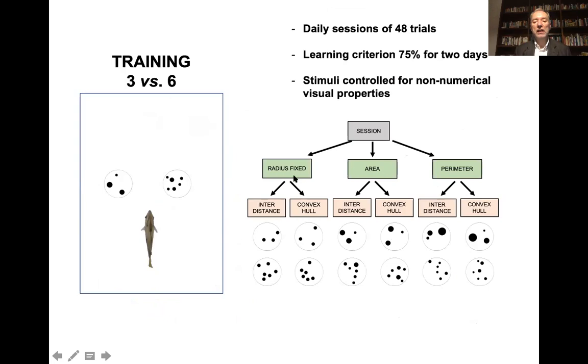And so we tested fish in a series of trials with continuous control. So for instance some trials were radius fixed and inter-distance and convex hull was identical in the two stimuli. Other trials were similar overall area, again inter-distance and convex hull controlled, or similar contour length, inter-distance and convex hull controlled.